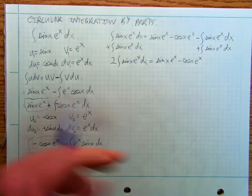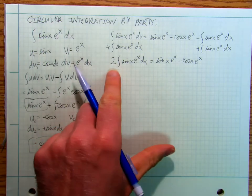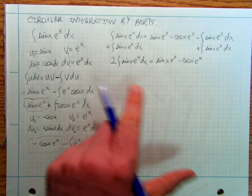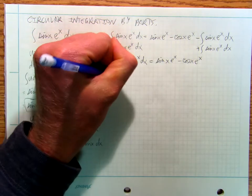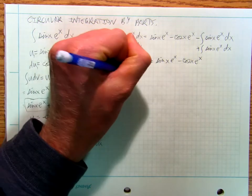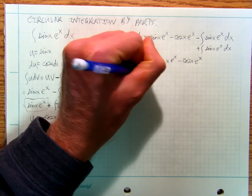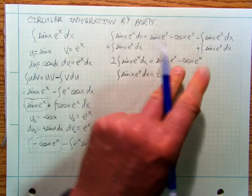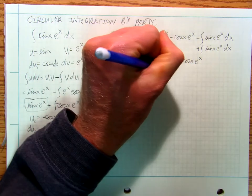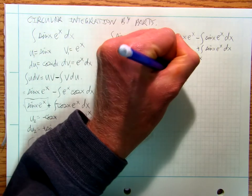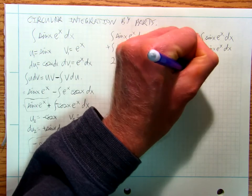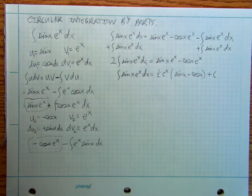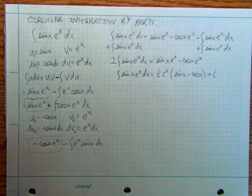I don't want two times the integral — I want just one times it. So I divide both sides by two, and I take e to the x out of both terms. And there's my answer.